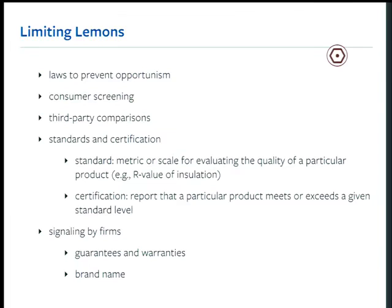You can come up with standards and certificates where you actually measure the quality of a particular good. When buying a house, there are huge transaction costs and unobservable quality differences — you don't know what's in the walls, the wiring quality, how good the foundation is. Certificates like R-value ratings for insulation give standardized quality measures. There's also certification from third-party authorities. In cars, dealer-certified used vehicles cost a bit more but guarantee a minimum quality level, often with a 60,000-mile warranty. Certification and guarantees are often used jointly.